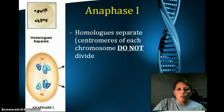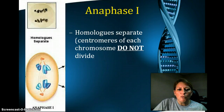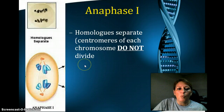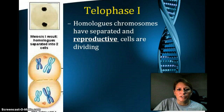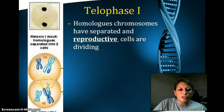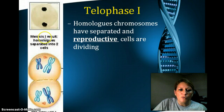Next we have anaphase I. During this time, when we looked at anaphase in mitosis, the actual chromosomes split into chromatids and moved toward the poles. But for anaphase I, it's simply the homologous chromosomes that are separating — they do not divide. The chromosomes have not divided yet during anaphase I. Then we have telophase I. During this time, we started off with one cell, and now we have two individual reproductive cells. Meiosis I results in homologs separated into two cells.